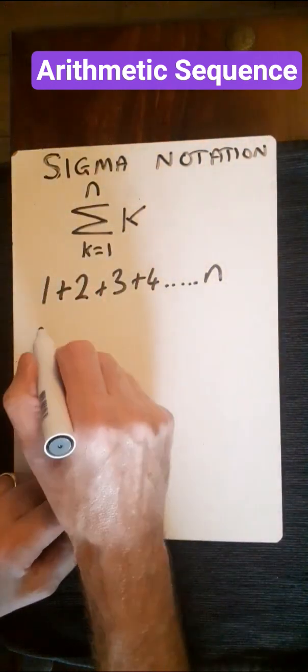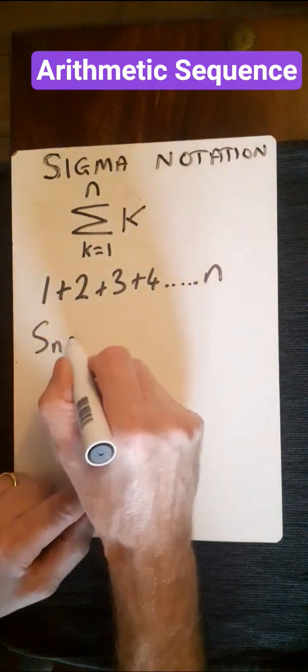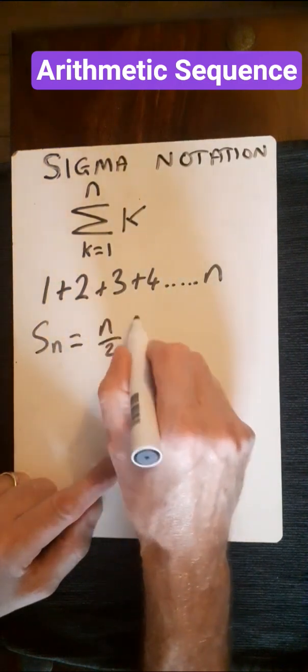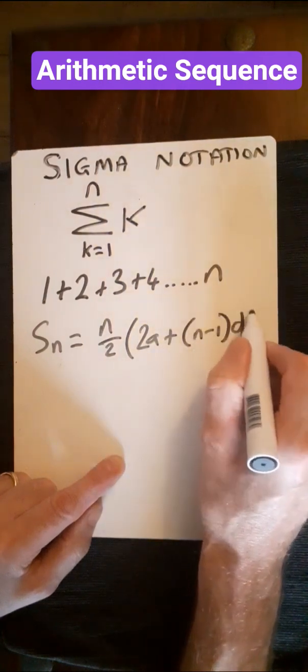So then to add all these up, we use the partial sum for an arithmetic sequence, which is n over 2, 2a plus n minus 1 times d.